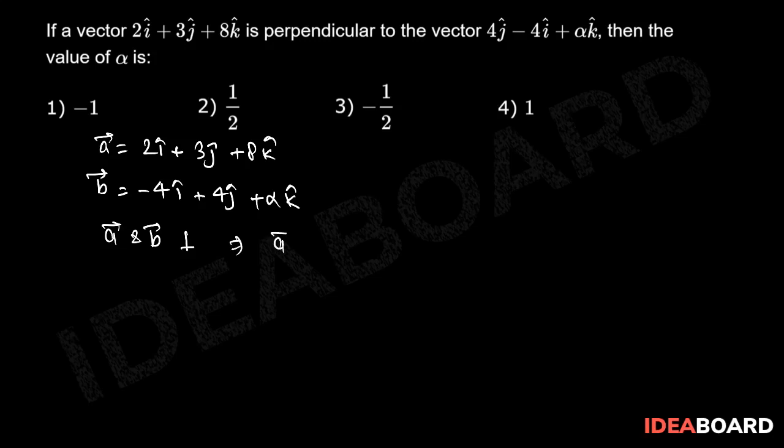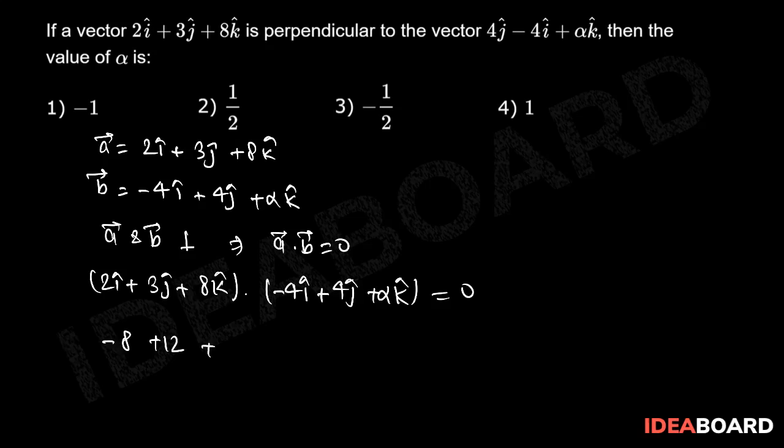then it implies that dot product of A and B should be equal to 0. That means 2i cap plus 3j cap plus 8k cap dot minus 4i cap plus 4j cap plus alpha k cap should be equal to 0. So we can write minus 8 plus 12 plus alpha into 8 should be equal to 0.